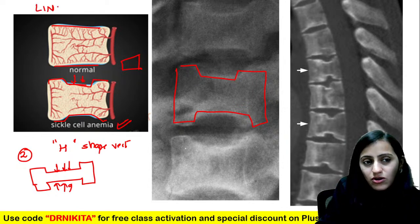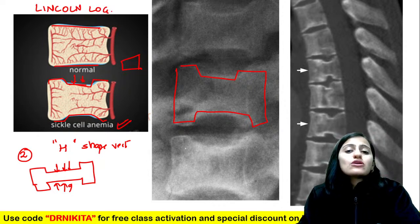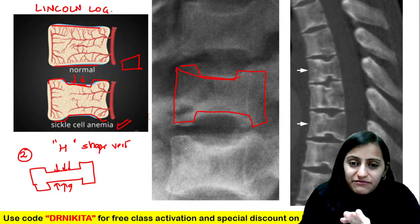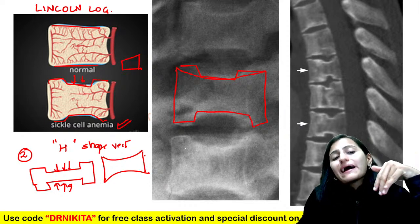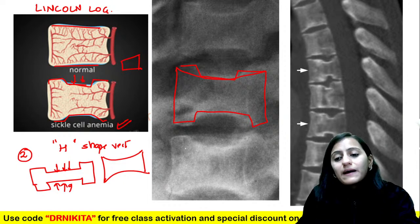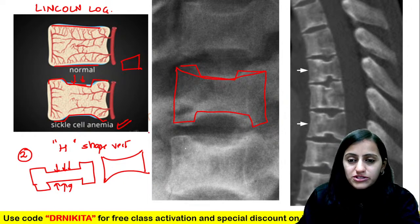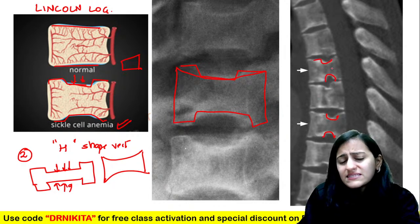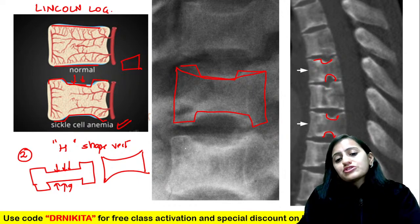The H-shaped vertebra is also called the Lincoln log vertebra. This is the initial stage. When the entire end plates become involved, the vertebra becomes biconcave — also called the codfish vertebra in the later stages. Codfish vertebra is also seen in osteoporosis. That central end plate depression is what we call the H-shaped vertebra.